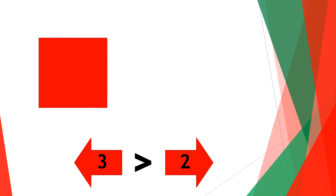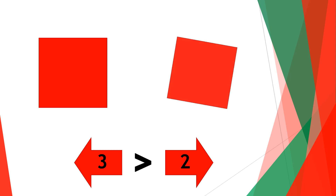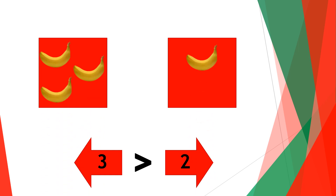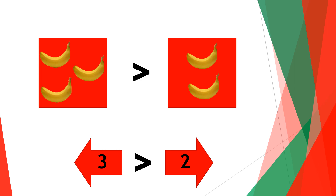If you pour three bananas on one side and two bananas on the other side — one, two, three and one, two — this means that three bananas is more than two bananas, so that clearly shows that three is greater than two.